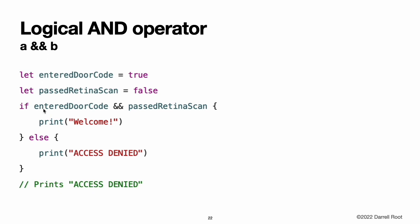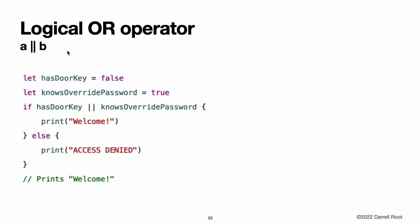This example considers two Boolean values and only allows access if both values are true. The logical OR operator is an infix operator made from two adjacent pipe characters. You use it to create logical expressions in which only one of the two values has to be true for the overall expression to be true. Like the logical AND operator, the logical OR operator uses short-circuit evaluation. If the left side of a logical OR expression is true, the right side is not evaluated. In this example, has door key is false, but knows override password is true. Because one value is true, the overall expression also evaluates to true and access is allowed.